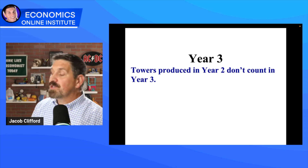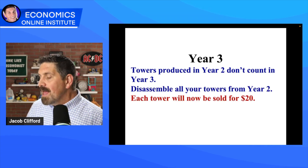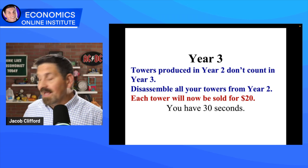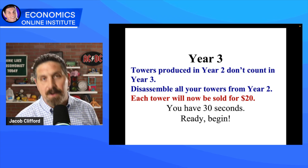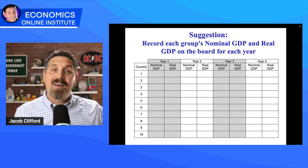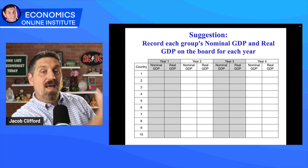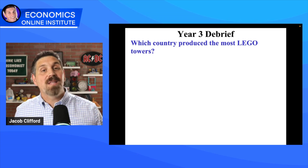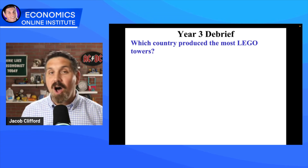In Year 3, towers produced in Year 2 don't count, so disassemble those towers and put them back in the bin. Each tower is now sold for $20 — the price has gone up. Students have 30 seconds, everyone's working. On your mark, get set, and go. It's a great idea to put a chart on the board. Have students report their nominal and real GDP for Years 1, 2, and 3, so they can see how all groups are doing. Give praise to the groups that produce the most.